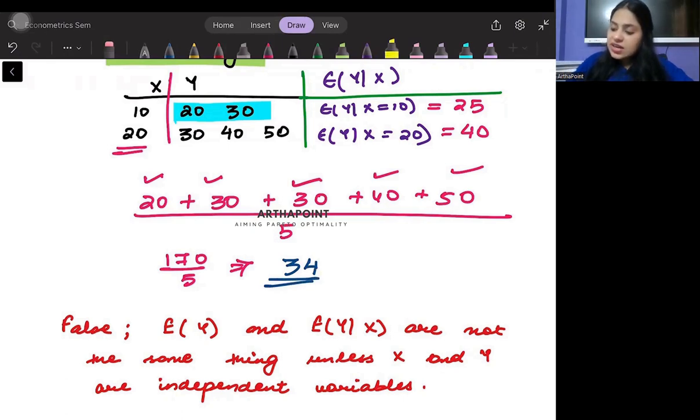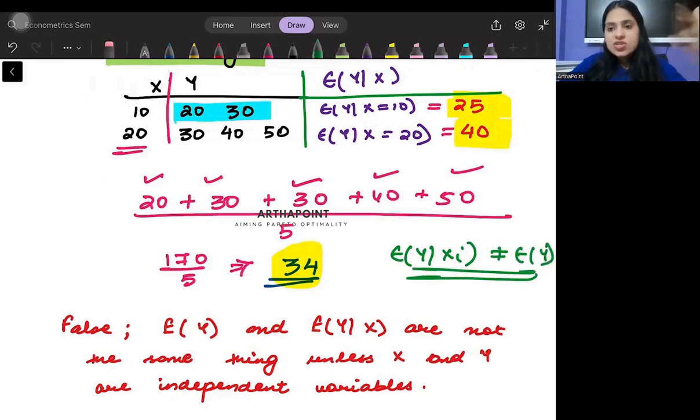So you see that the unconditional value of Y is 34 whereas the conditional mean values of Y will be 25 and 40. And we can clearly see that E of Y given Xi is not equal to just E of Y. So we can therefore say that the two things don't mean the same thing.